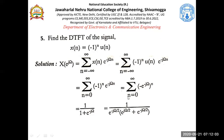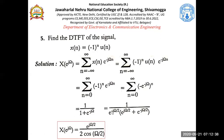To express this in sinusoidal form: multiply numerator and denominator by e^(jω/2). The denominator e^(jω/2) + e^(−jω/2) = 2cos(ω/2). So the result becomes e^(jω/2) / (2cos(ω/2)). You could stop at 1/(1+e^(−jω)), but if you need sinusoidal form, this is how it is done.